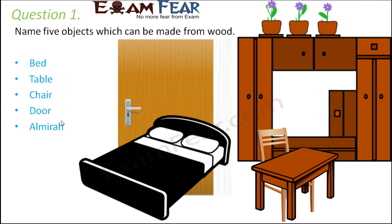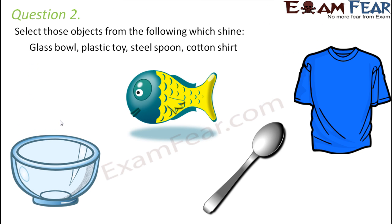Question number two: select those objects from the following which shine — glass ball, plastic toy, steel spoon, cotton shirt. If you look at all of these, which one has a shiny surface? Definitely the stainless steel spoon, because if you take it in front of you, you can actually see yourself. If you think of the glass ball, that surface is also shiny — it has a smooth surface.